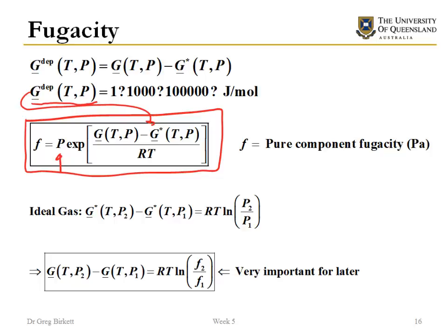Why this is useful isn't necessarily immediately apparent, but you can get a clue if we consider the difference in Gibbs free energy for an ideal gas. For an ideal gas at two different pressures P₂ and P₁, the difference in Gibbs free energy is simply RT ln(P₂/P₁).